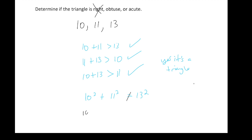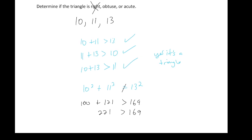Instead, we have 100 plus 121, which is 221, and its relationship to 169: 221 is greater than 169. Now, if the sum of the squares of the two smaller sides is greater than the square of the largest side, this triangle is acute. And that is the answer.